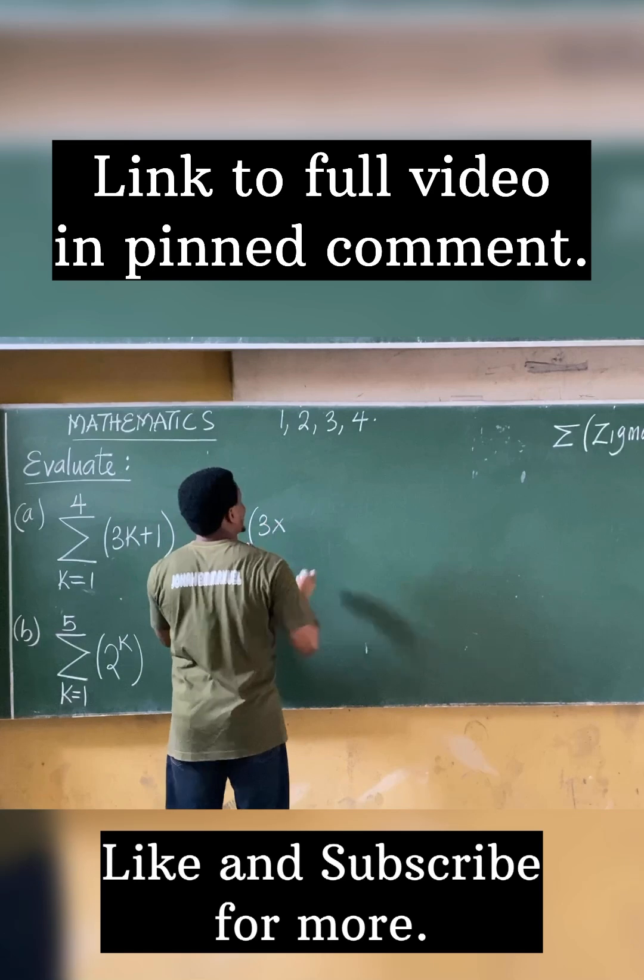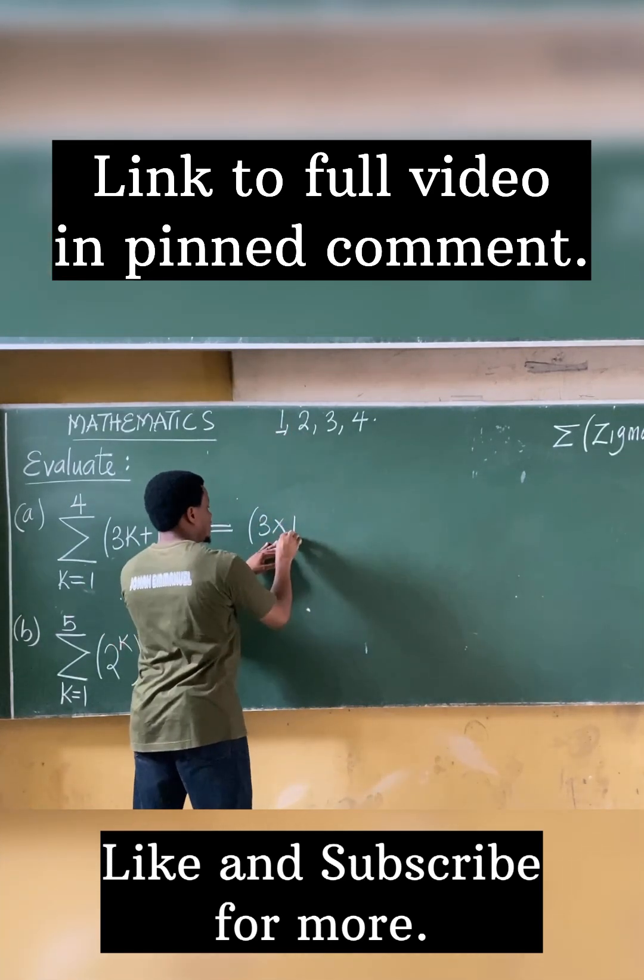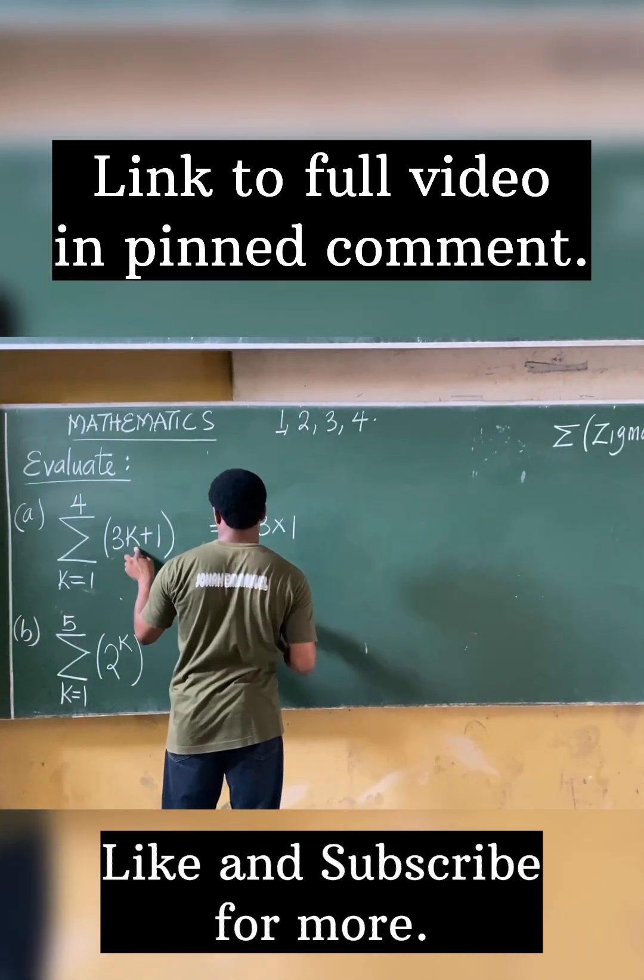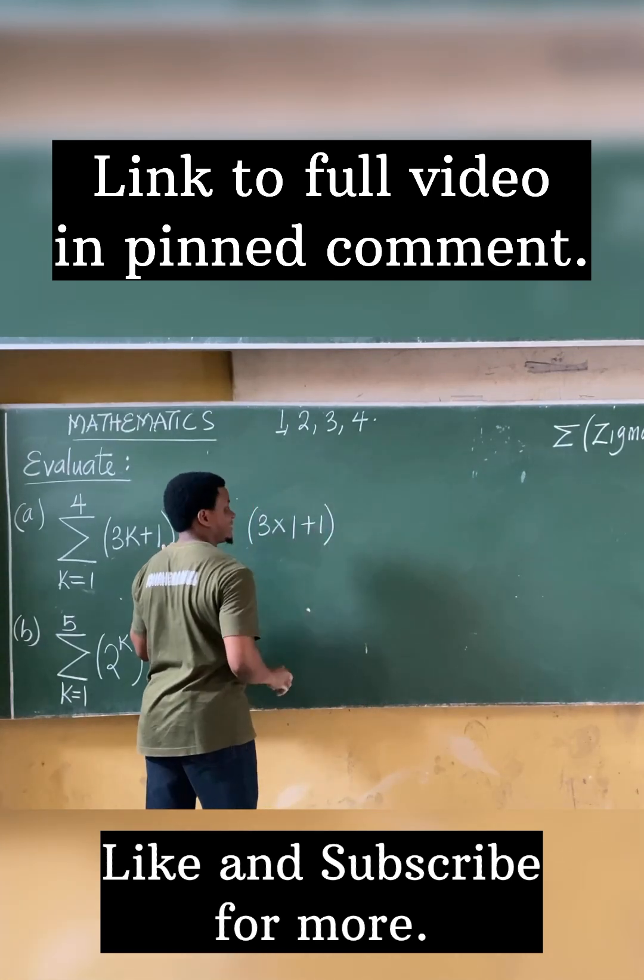I'm taking my first term here, which is 1. So 3k becomes 3 times 1, plus 1. So I have plus 1. That's my first term.